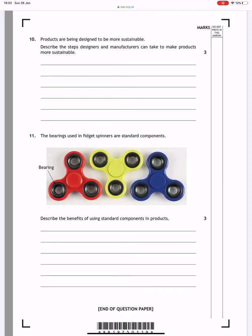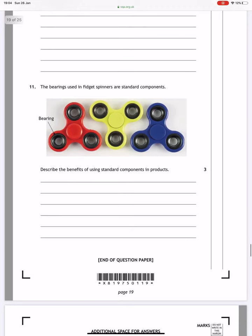So these are some of the answers that you could give to this question. Question 11, the bearings used in fidget spinners are standard components. Describe the benefits of using standard components in products.